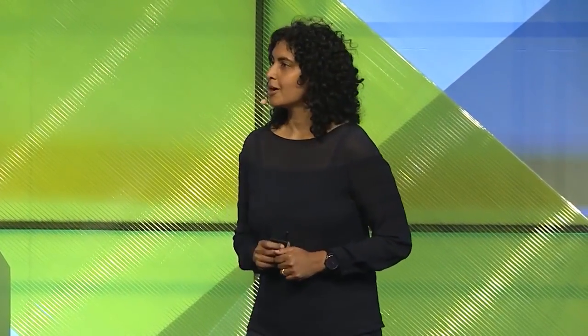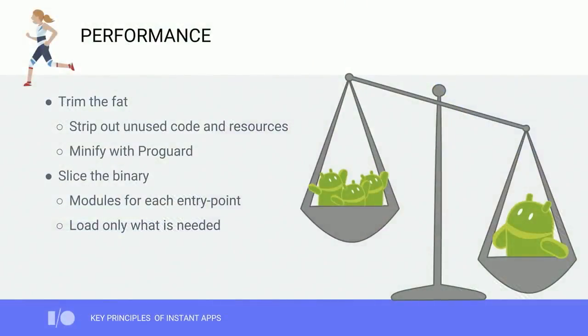Finally, let's talk about performance. Instant Apps are loaded and run on demand, so the size of the binary has a huge impact to the user-visible startup latency. The smaller the binary, the faster it loads, the better the user experience. So it's very important to have small, lightweight binaries to have a great Instant Apps experience. We recommend starting your app on a very strict diet — zero fat.